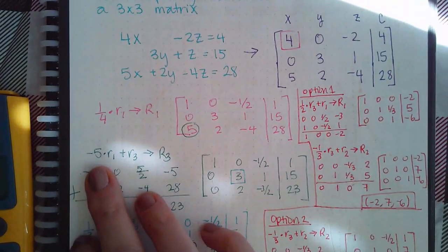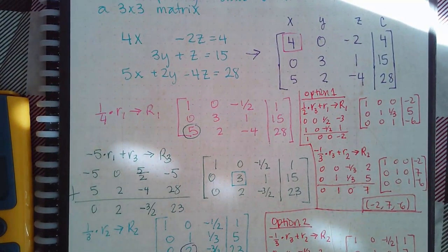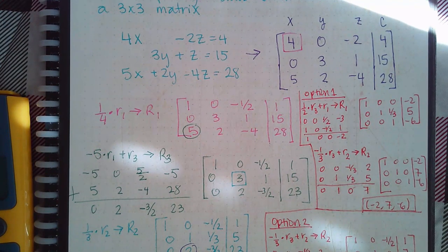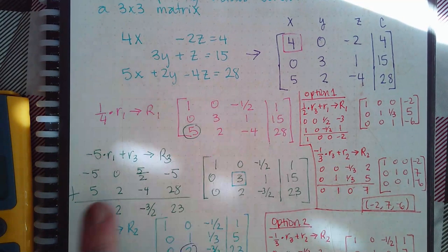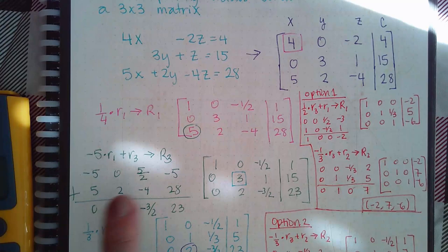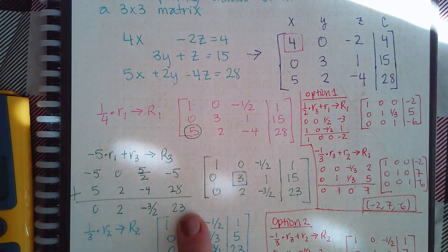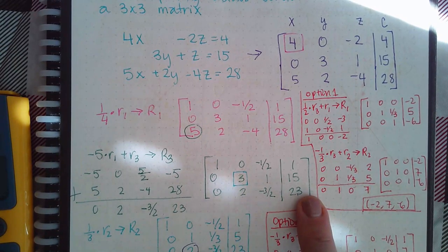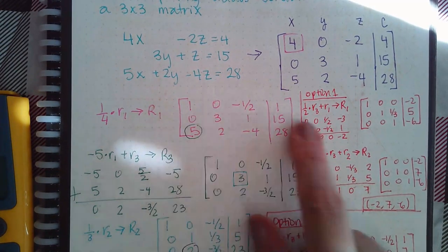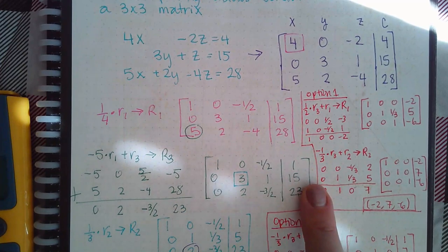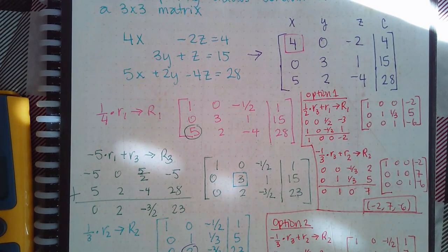Row two and row three I just copied from the previous augmented matrix. Now to change the five to zero, I use negative five times row one plus row three to give me the new row three. I multiply every entry in row one by negative five, write row three underneath, add them together, and that replaces row three. Notice that row one and row two remain the same.